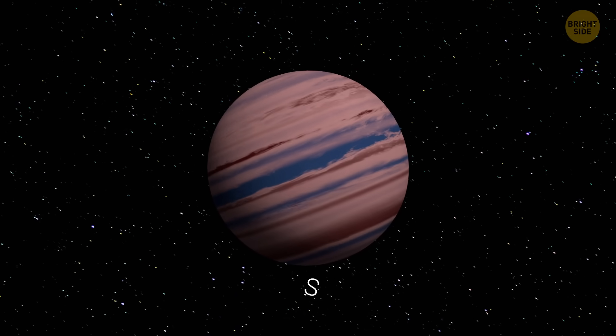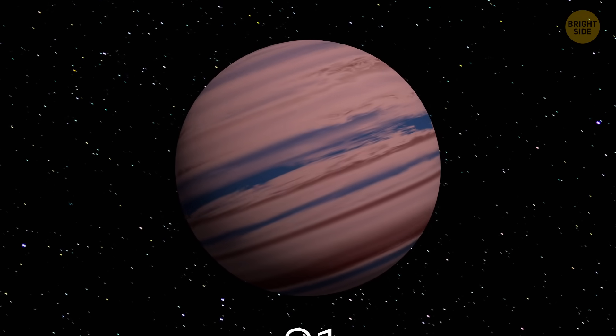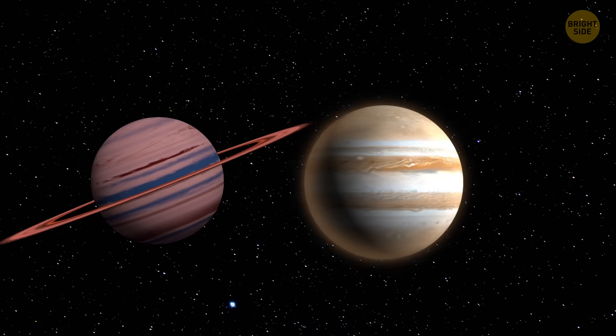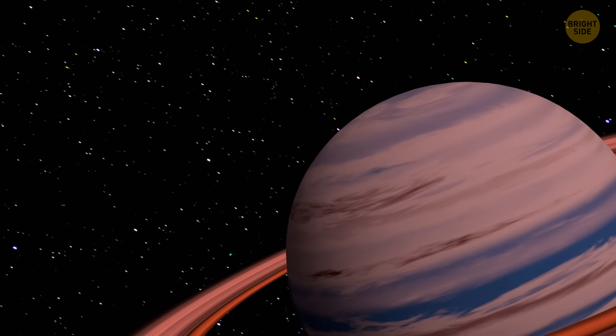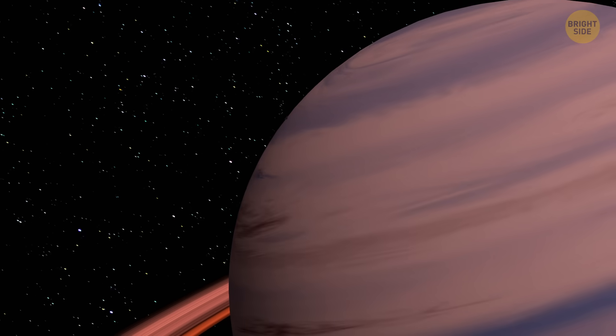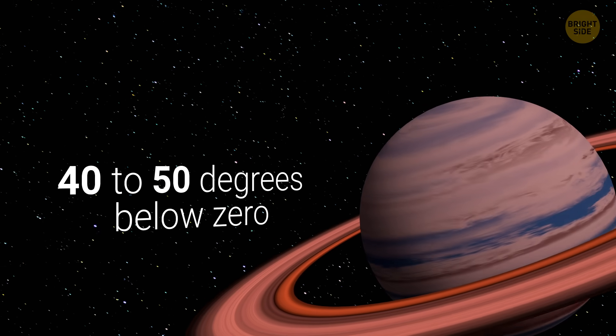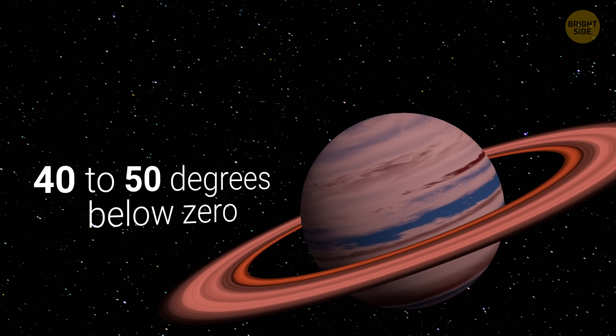The planet they spotted is called S1 for now. Sounds like a phone model, but this thing is a gas giant like Jupiter or Saturn, just a little lighter. You couldn't land on it, it's just a giant ball of gas. Temperatures there are around 40 to 50 degrees below zero Fahrenheit.